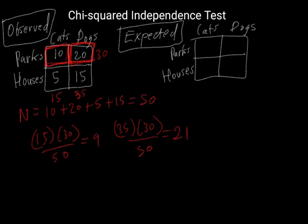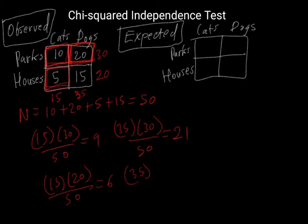If we went about the same exact procedure, and we computed it for houses, cats cell, which is the bottom left-hand cell, we have the row sum as 20, and then the column sum as 15, so we have 15 times 20 divided by 50, which is equal to 6. And then lastly, for the bottom right-hand cell, we're going to compute that as 35 times 20 divided by 50, which is 14. Now we can go ahead and put these counts in the table of expected counts.